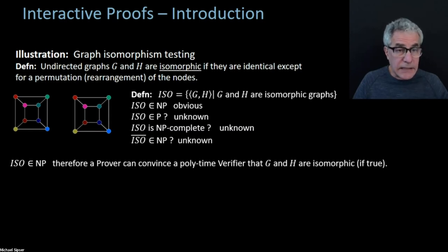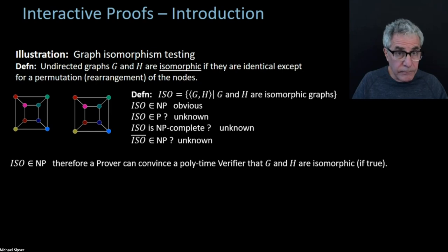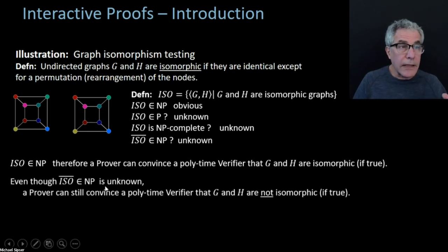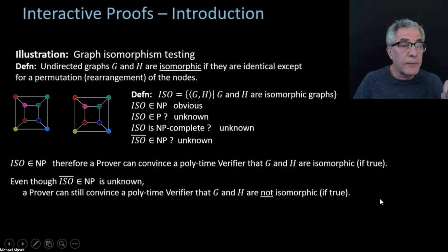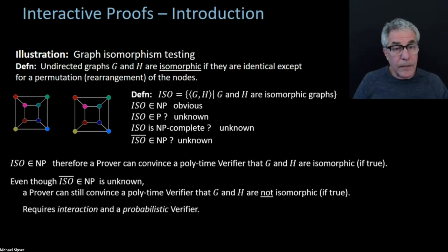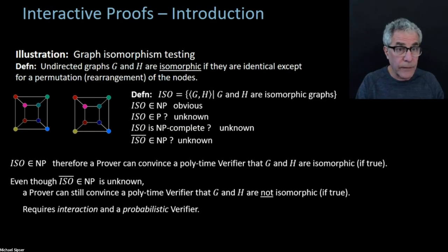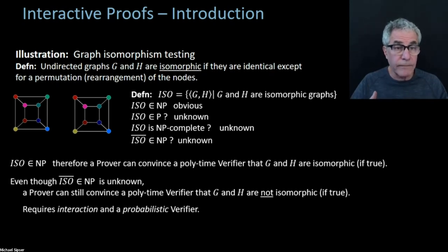Now for the non-isomorphism case, we don't know that that problem's in NP. But it's still possible for a prover to convince a verifier that graphs are not isomorphic, if you change the rules of the game slightly. Even though the non-ISO problem is not known to be in NP, a prover can still convince a polynomial time verifier that graphs are not isomorphic — assuming they are in fact not isomorphic — provided that the prover and the verifier can interact with one another, so the verifier can ask questions of the prover, and the verifier gets to be probabilistic. That's a sense in which this notion is a kind of probabilistic version of NP.